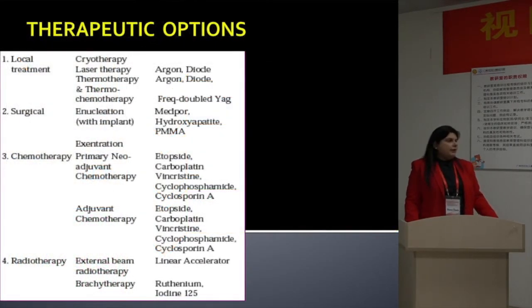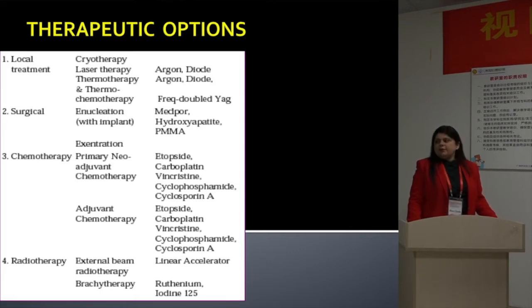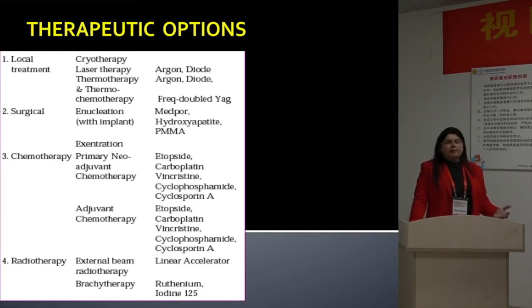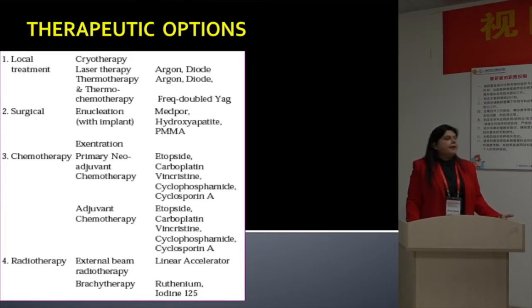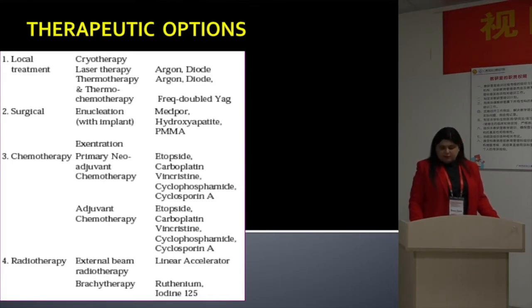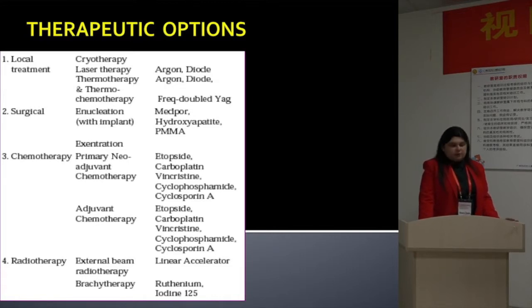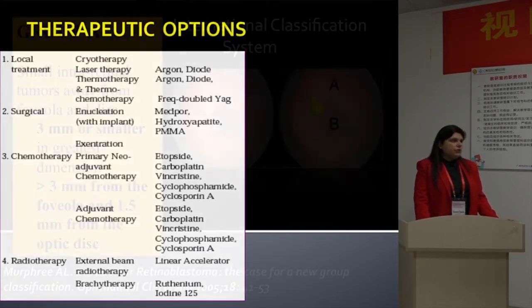We have many therapeutic options for retinoblastoma: local treatment, surgical treatment, chemotherapy, and radiotherapy. As far as chemotherapy is concerned, it can be used as primary chemotherapy for chemoreduction, as adjuvant chemotherapy in cases of higher-risk histopathological features, as neoadjuvant chemotherapy, or in cases of extraocular retinoblastoma. I will confine my talk to the systemic chemotherapy used for intraocular tumors.